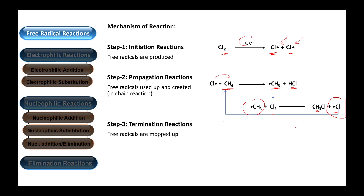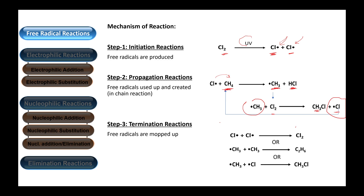During the termination step, the free radicals are mopped up by combining with one another. For example, a chlorine free radical combines with another chlorine free radical to make a chlorine molecule Cl₂, or a methyl radical combines with another methyl radical to make C₂H₆, or a methyl radical combines with a chlorine free radical to make methyl chloride. This step is really important because during it we get rid of the free radicals and they are all converted into molecules.